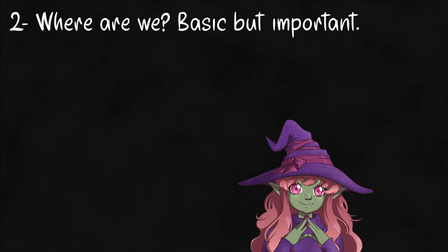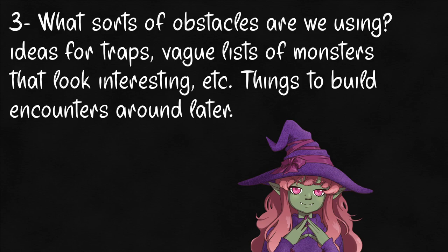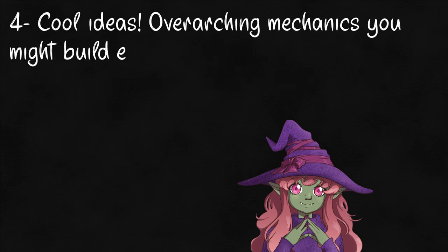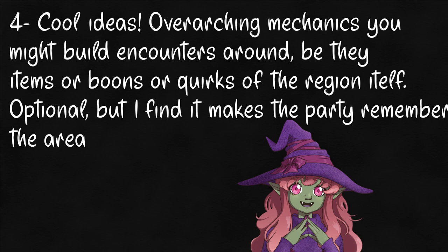Two: where is this dungeon? The location helps us know what sort of tools we have at our disposal. Three: what is their obstacle in the broadest of strokes? There's a violent cult, a kobold den full of traps, or this is giant country. We're not looking for specific encounters — we're figuring out what concept to build those encounters around. Four: what makes this place special? There's a crystal that makes dead magic zones, or things that die come back as zombies, or a group blessed by a nameless trickster god acts like they have advantage when at disadvantage and vice versa. This step is optional, but it makes the whole area stick in the party's mind.